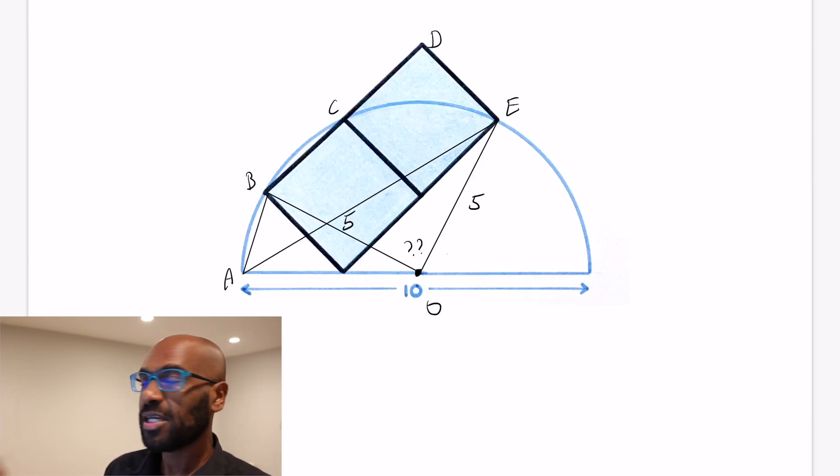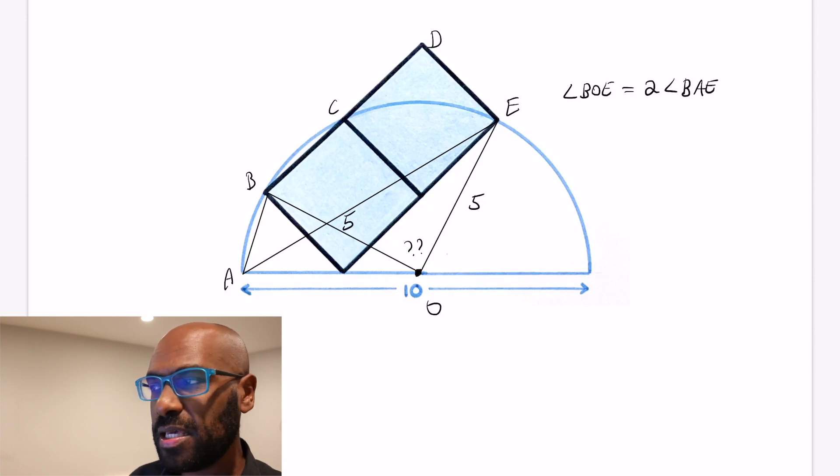To figure out that central angle BOE, we can instead infer what angle BAE is. Because BAE is actually an angle on the circle, angle BOE, the central angle is twice angle BAE.